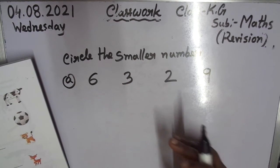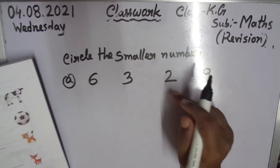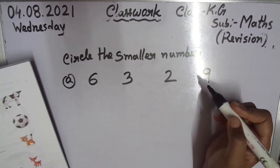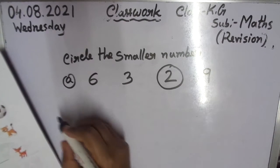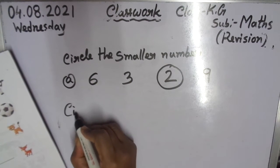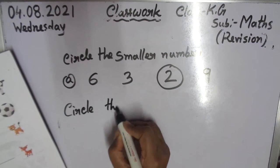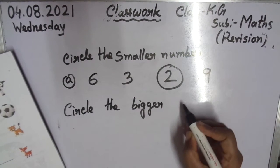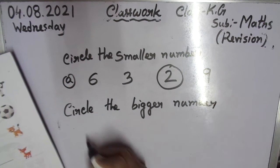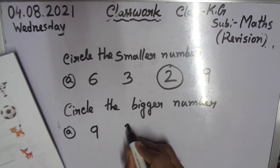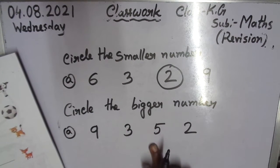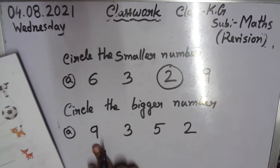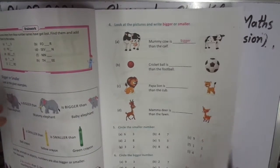So 6, 3, 6, 3, 2, 9 — 4 options are here. You find the smaller number. See: 1, 2, 3, 4, 5, 6, 7, 8, 9. So 1 is the smallest number. 1 is not here, so 2 is the first number — 2 is the smaller number. Practice. Next: circle the bigger number. So 1, 2, 3, 4, 5, 6, 7, 8, 9 — 9 is the big number, so circle it. Children, practice smaller number and bigger number.